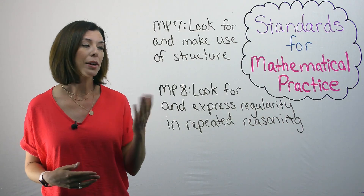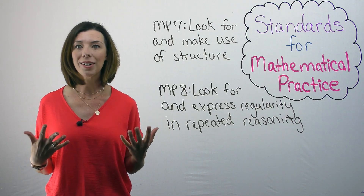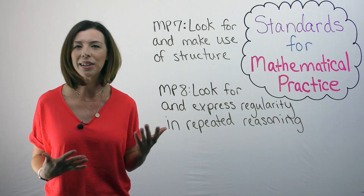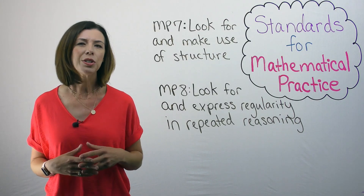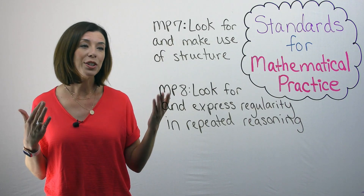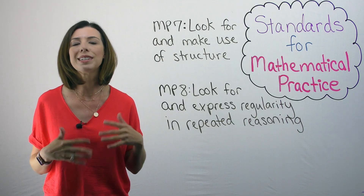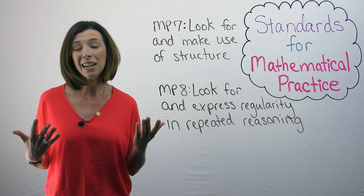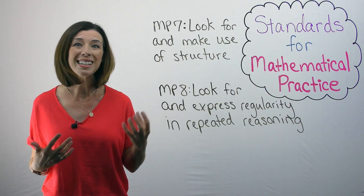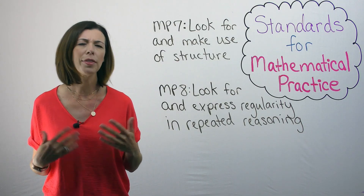The last mathematical practice is number eight: look for and express regularity in repeated reasoning. We want students to see patterns in numbers. For instance, if I'm skip counting by two, I notice that the last digit is always an even number. Another example is place value — 10 is 10 plus 0, 11 is 10 plus 1, 12 is 10 plus 2 — and students notice the pattern. This could also be looking at a multiplication chart and finding that all multiples of 5 either end in 0 or 5, or noticing that a negative times a negative always gives a positive. We want students to find those patterns on their own through repeated reasoning.